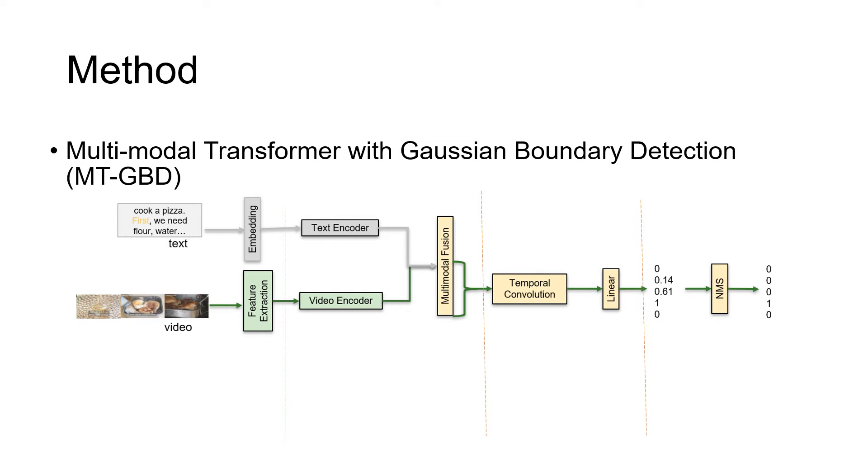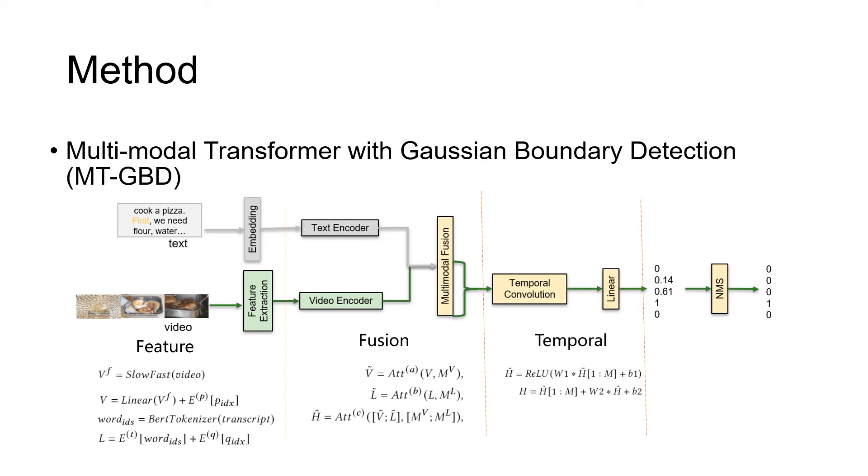Now we introduce the new multi-modal transformer model. The model includes four major modules. First, there are two extractors to extract video and text features separately. And then we adopt the self-attention model to encode each modality, and another self-attention model to fuse the multi-modal fusion. And then we adopt the temporal convolution network followed by a linear layer to predict the final segmentation labels.